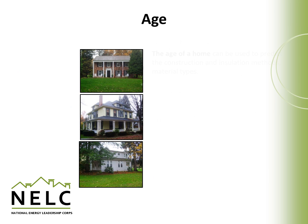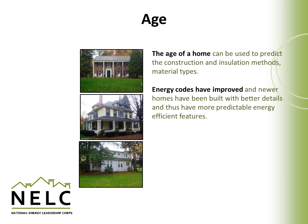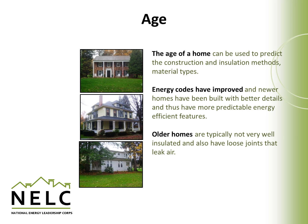The age of a home can be used to predict the construction methods and insulation materials that were used in the home. Generally over time, as energy costs have increased, newer homes were built with better details and better materials and usually have much more predictable energy efficient features. Older homes are typically not well insulated and in some cases were built with no insulation at all. They also have loose joints and can leak air because materials have separated over time or the home was just not built to be very tight.